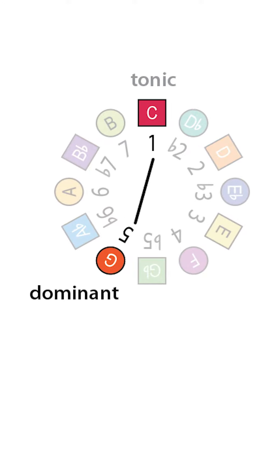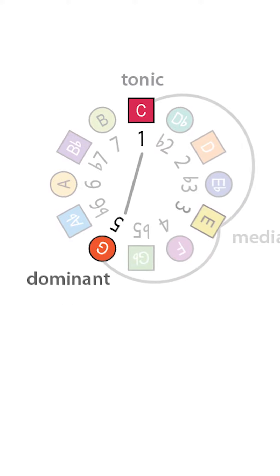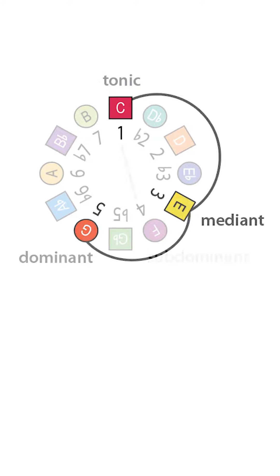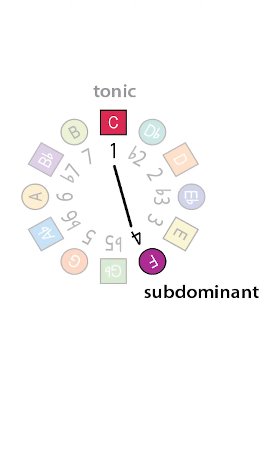Dominant refers to scale degree five, and it's called dominant because it's next in importance to interval one, or the tonic. Mediant is another name for scale degree three. The term mediant is Latin for in the middle, and the scale degree is midway between the tonic and the dominant. So that's why it's called the mediant.